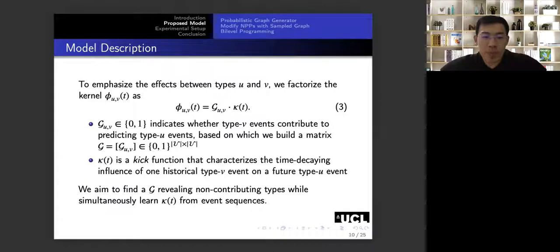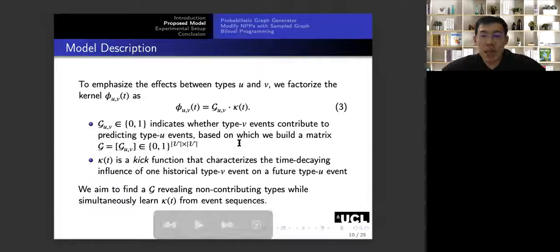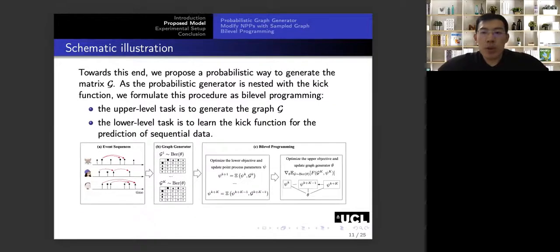And we factorize the kernel into two parts in equation 3. The first part is G. It is a binary value, indicating whether the type V events contribute to the predicting of type U events. And based on G_uv, we can compute, we can build a matrix that is also a graph G. The second part is a kick function. It describes the time decaying influence of historical events on the occurrence of future events. So in this paper, we aim to find a latent G and at the same time learn the kick function.